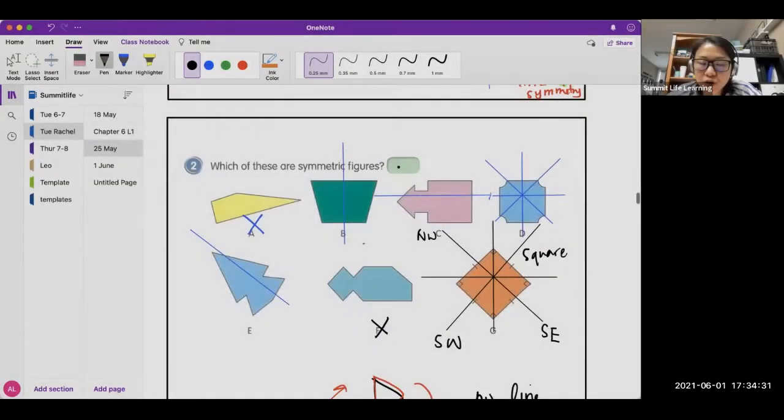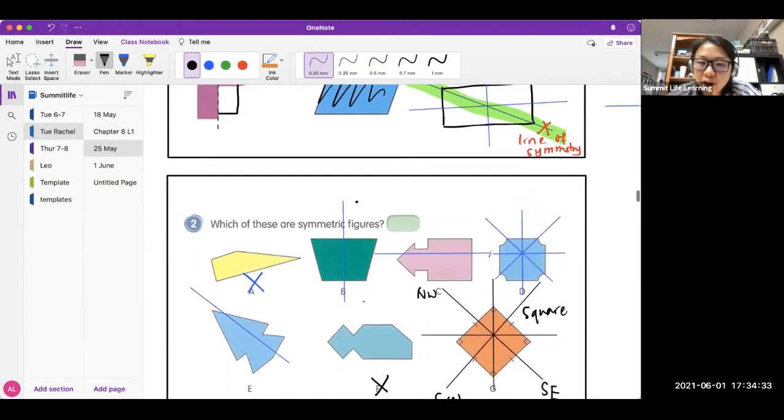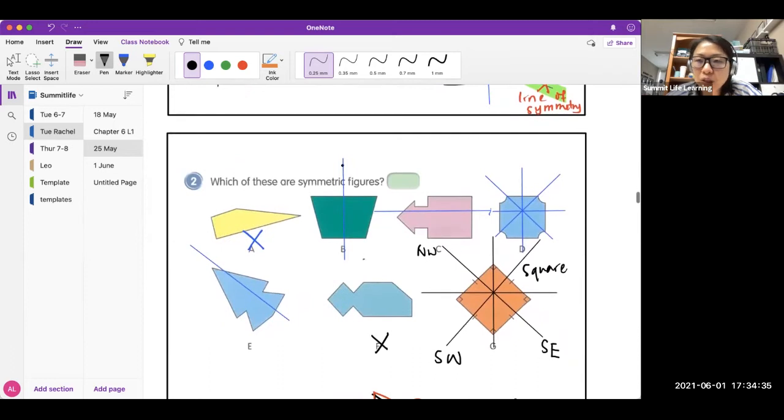Last time we talked about symmetry. We were given a figure and then we found some ways to cut it so that when we have cut it, we can fold the figure along the line so that we can have the figures on one side overlapping with the other side. If it can overlap perfectly, we call it symmetric.